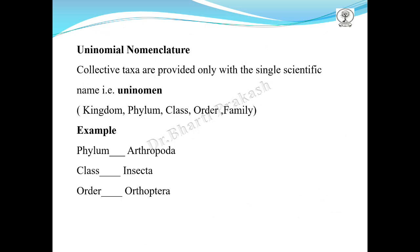What is uninomial nomenclature? The collective taxa are provided with only a single scientific name. For example, a single name for kingdom, a single name for phylum, a single name for class, for order, and for family. For example: phylum Arthropoda, class Insecta, order Orthoptera. So in uninomial nomenclature there is one scientific name.